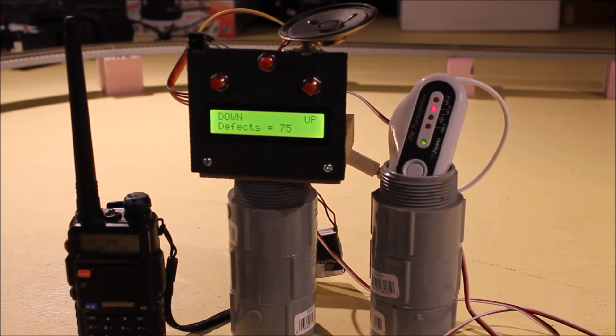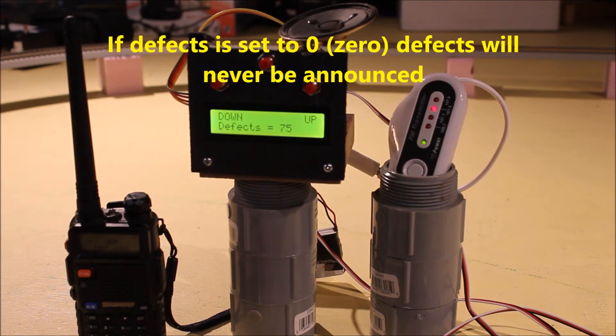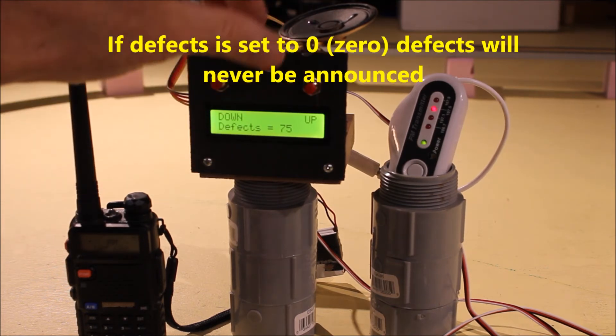Now it's going to remind you that the up and down will set defects. It's currently set to 75 percent, which means three fourths of the time you will get a defect. You can change that up and down. Hit menu when you're done.